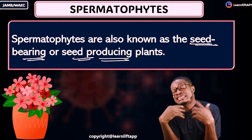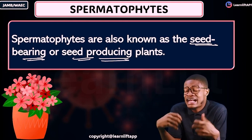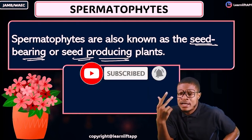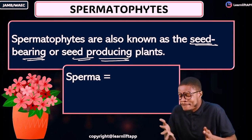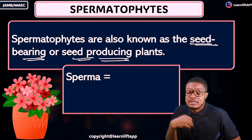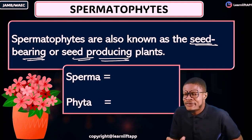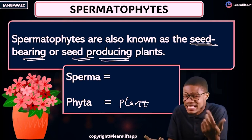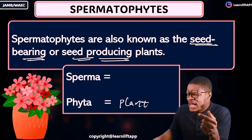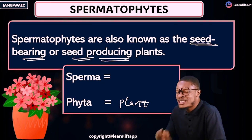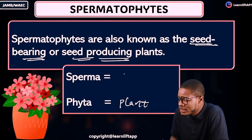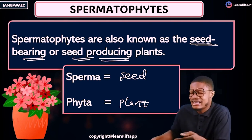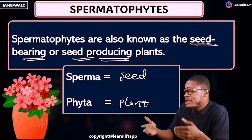Spermatophytes are also known as the seed-bearing or seed-producing plants — in other words, they are capable of producing seeds. The word 'spermatophyte' is gotten from two words: 'sperma' and 'phyte.' The word 'phyte' means plants. A lot of people may think 'sperma' means sperm, but sperma means seed. So spermatophytes or spermatophyta are the seed-producing or seed-bearing plants.